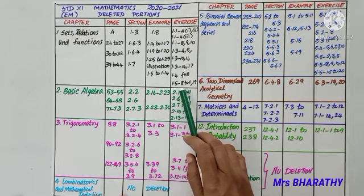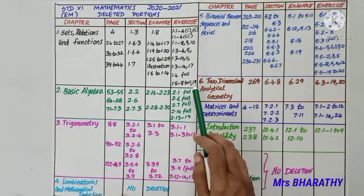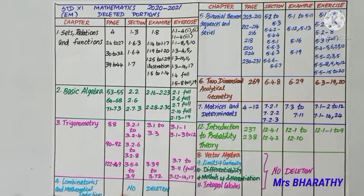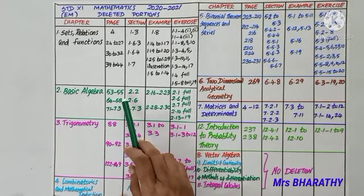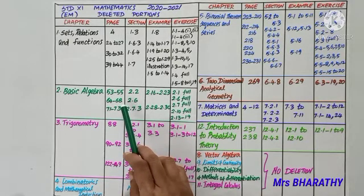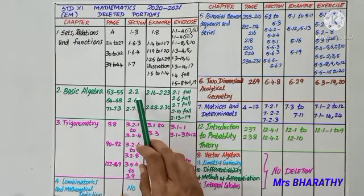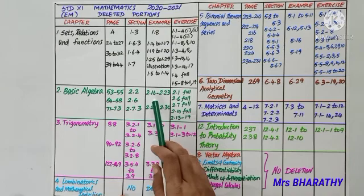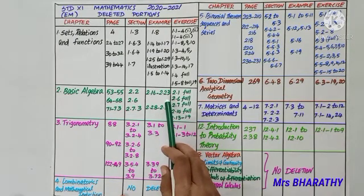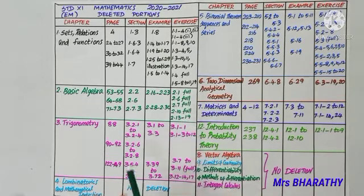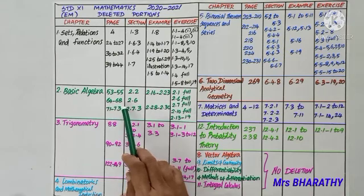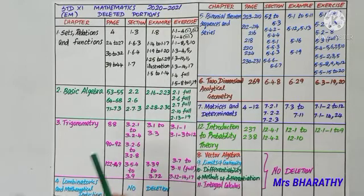In exercise 1.5, objective type questions, problem numbers 8 to 11 and 19 are deleted. Chapter 2: Basic Algebra - page number 53 to 55, real number system, irrational numbers sections are all deleted, section 2.6, and examples 2.16 to 2.23 are deleted. Full exercise 2.1 is deleted.